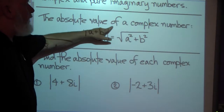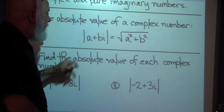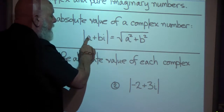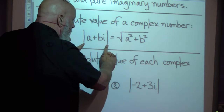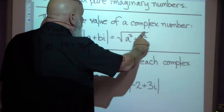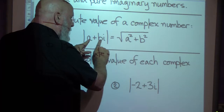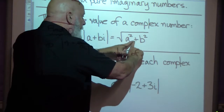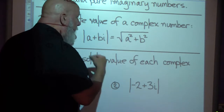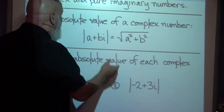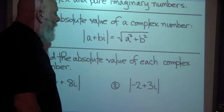The absolute value of a complex number is found like this: if you have it in standard complex form and you want to take the absolute value of it, you take these two numbers, square them, add them together, and then take the square root of that. That gives you the absolute value of that complex number.